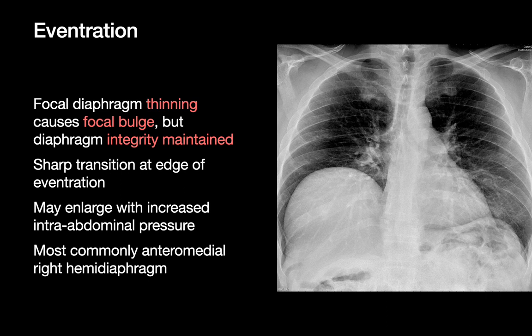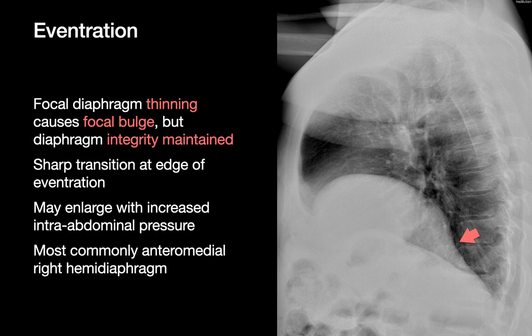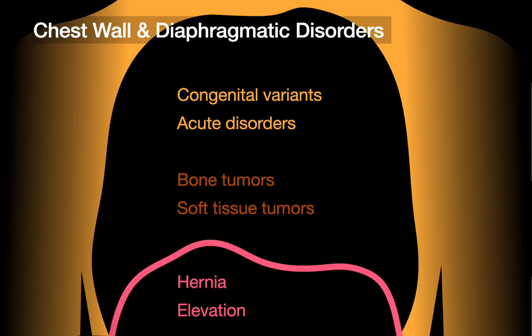With diaphragmatic eventrations, a focal region of diaphragm bulges upward. The diaphragm is physically intact in these patients with no macroscopic disruption or hole — it's just that the diaphragm in that area has become thinned or weakened. There's usually a point of focal transition of the diaphragm contour at the edges of the eventration, and the anteromedial right hemidiaphragm tends to be the most common site. Hopefully with this talk you'll have a more organized way of approaching chest wall and diaphragmatic issues on chest imaging.